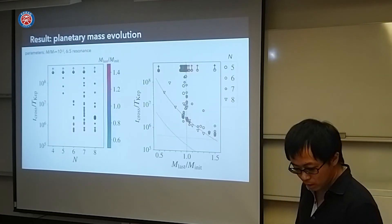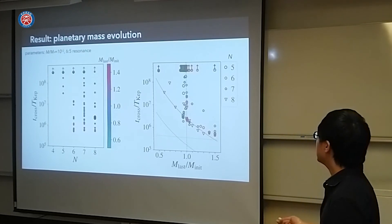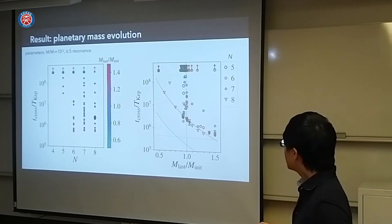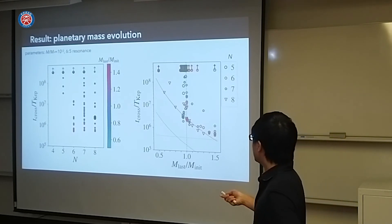We measure this time scale and this is the result. Without mass loss case is similar. There is a critical number of planets stable. But if we include the planet mass evolution, less than this number of planets are less than this, but it causes instability.